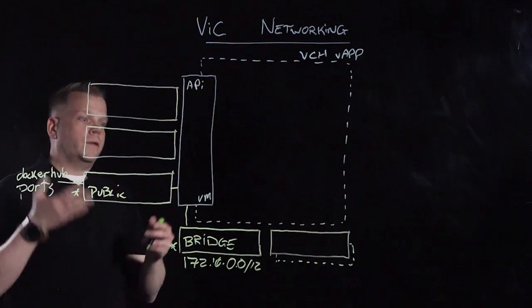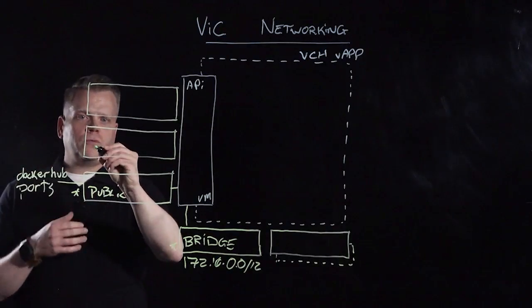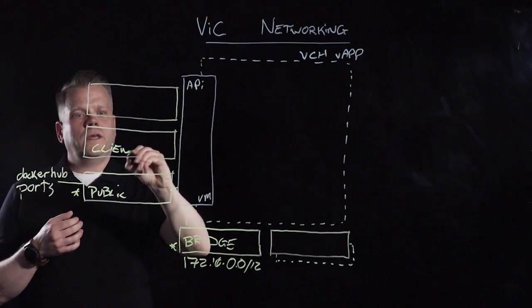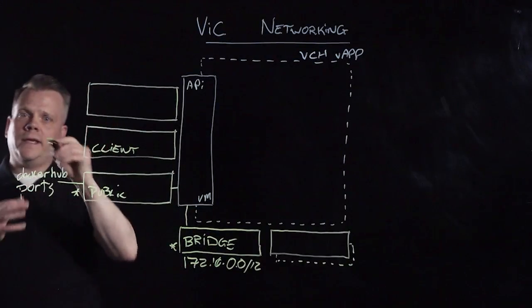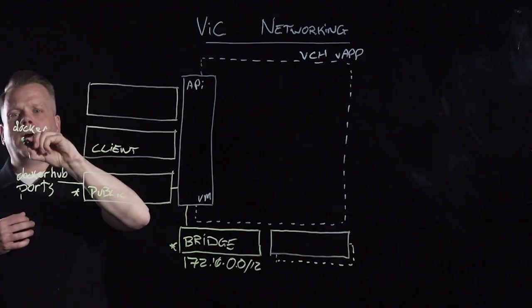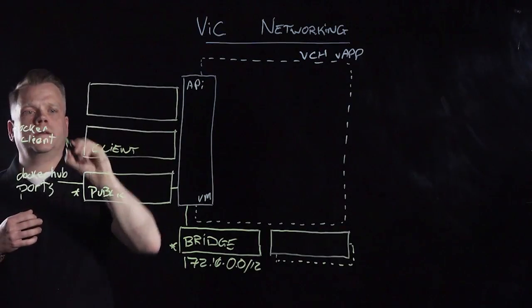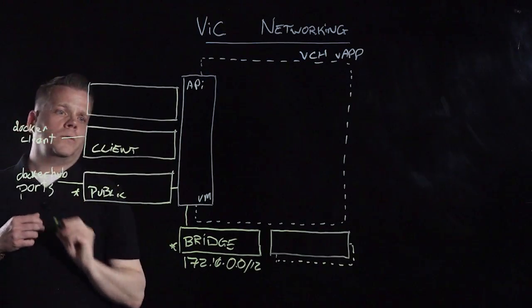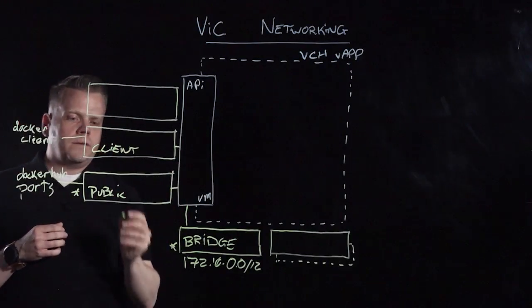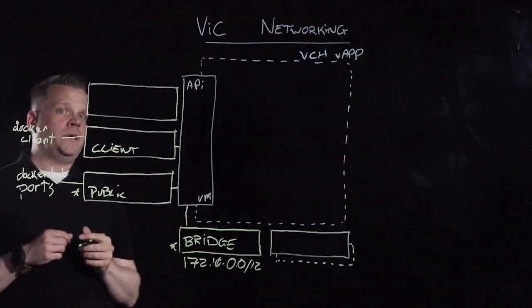Now we're going to talk about the three remaining networks that are optional. The first one is the client network. If you decide you want to isolate the Docker client traffic from the public network, you can do so leveraging this client network. Like the public network, this client network can use both DHCP or a static IP.